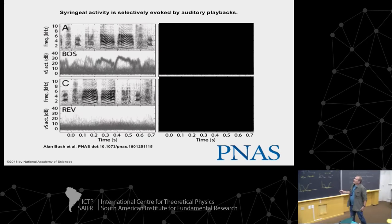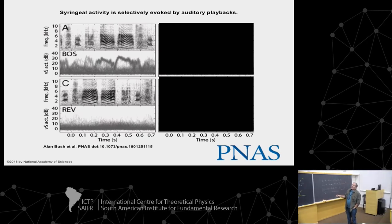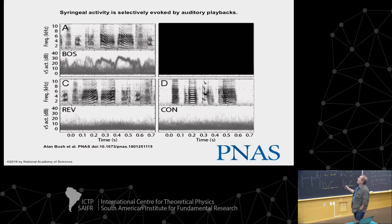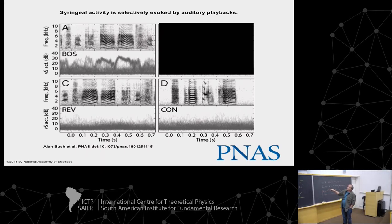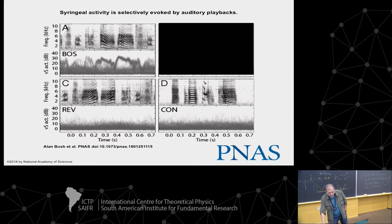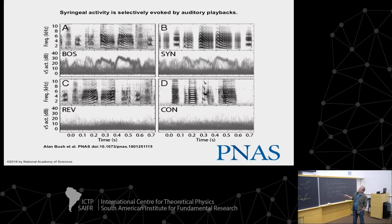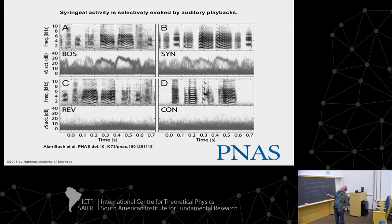What happens if you play the song in reverse? When you play the song in reverse, you have no pattern of activity, and basically you see that confirmed here. If you play the song of a different specific bird, you induce nothing at all. And then, in the spirit of advertising for nonlinear dynamics, you play the bird the song generated by a normal form — where you drive the normal form with the signal measured when the bird is singing — and you have a pattern that is very similar.